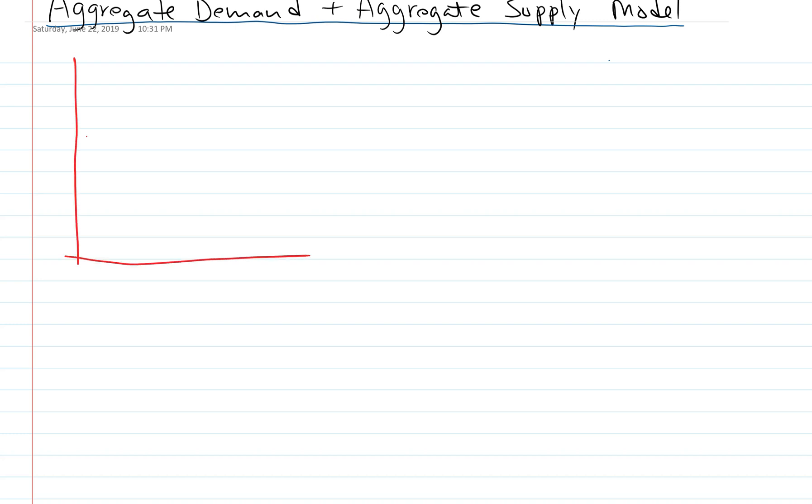So we have our new model. I'll do another video about the difference between this and supply and demand, but on one side we have our price level - you can think of that as the GDP deflator - and on the other side we have real GDP. This is a macro model showing the entire economy, so the price level of the economy and the output or whatever our economy is producing.